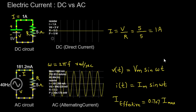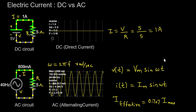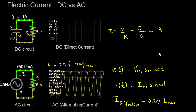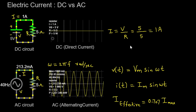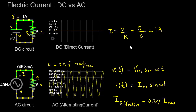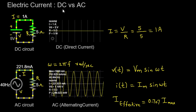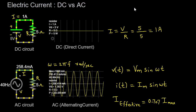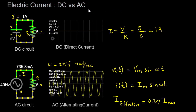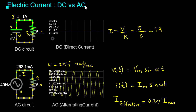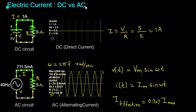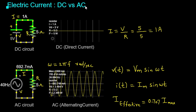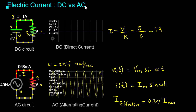Hello everyone! Today, we're diving into the captivating realm of electric current as we explore the distinctions between direct current (DC) and alternating current (AC). We'll take a closer look at how these two types of current function within a circuit and highlight their fundamental dissimilarities. So, let's embark on this enlightening journey.